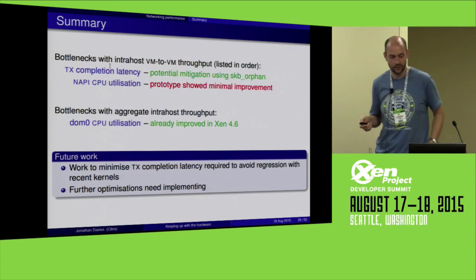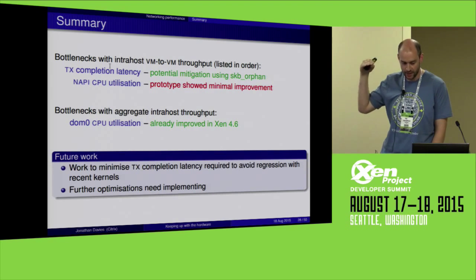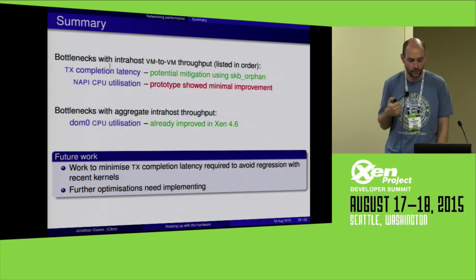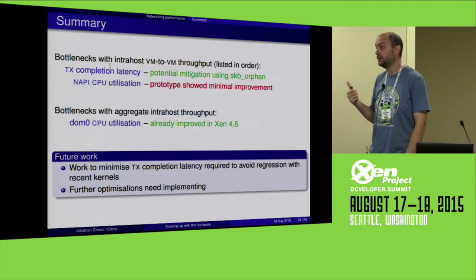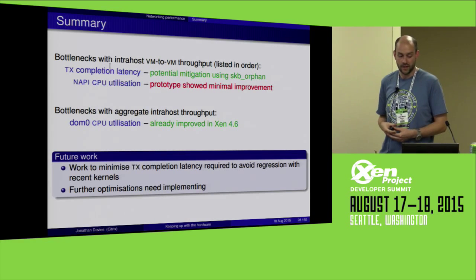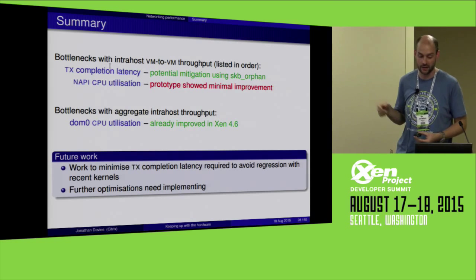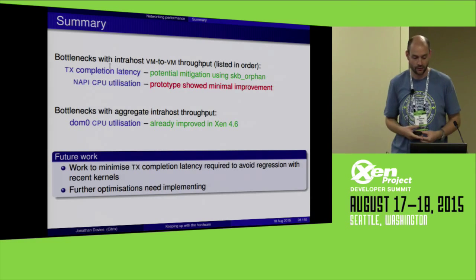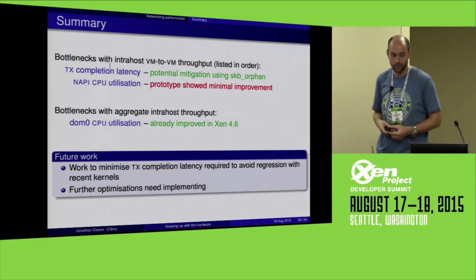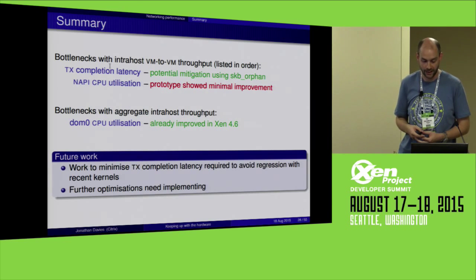To summarize where we stand for networking: we've got two bottlenecks to fix in order. First, TX completion latency — we need to reduce that, and one workaround is using SKB orphan to pretend TX completion happens earlier. Once that's done, we'll need to improve the efficiency of NAPI — still a big question mark there, as the ideas I had didn't show big improvements. For aggregate throughput, things are already improved in Xen 4.6 with more improvements to come, and I'm fairly happy with that.